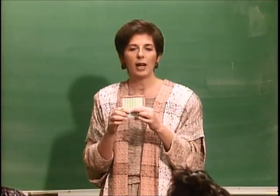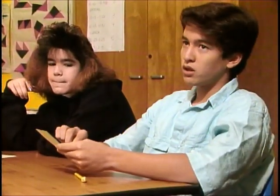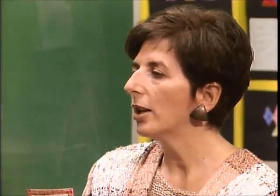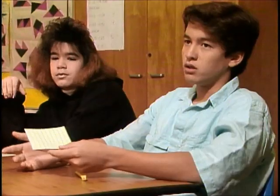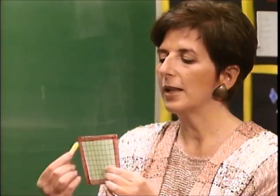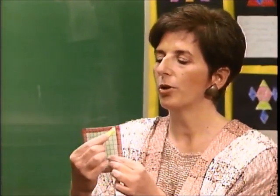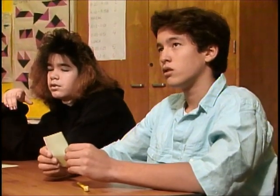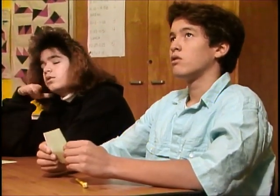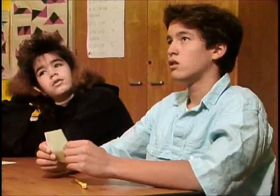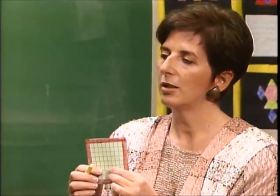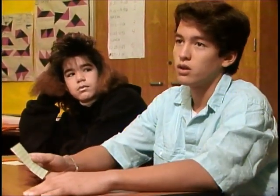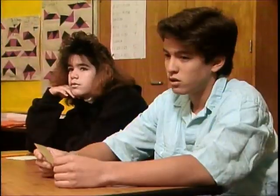Another group offers a different approach: 8 on each side, 8 times 8, which is 64. The teacher asks what 64 tells them — it's the 64 squares inside the middle. The teacher then asks if they can use that information to figure out how much is outside the border. The student explains you just subtract: 100 minus 64, because there are already 100 squares in the whole square, giving the border count.